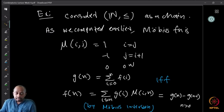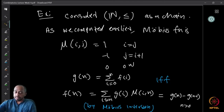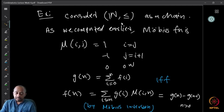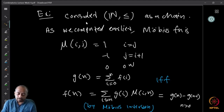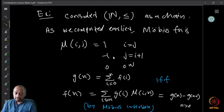Consider the natural numbers ℕ with the usual order, which is a chain. For computing the Möbius function, we can see that because of the telescoping property, it works for all n. The Möbius function of this poset is: μ(i, j) = 1 when i = j, μ(i, j) = −1 when j = i + 1, and 0 otherwise.